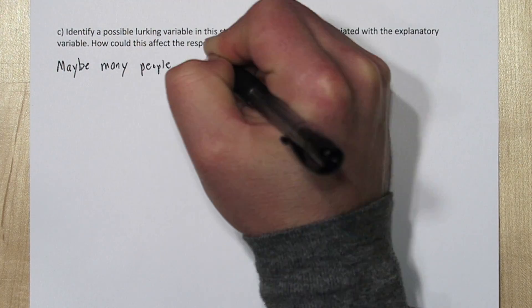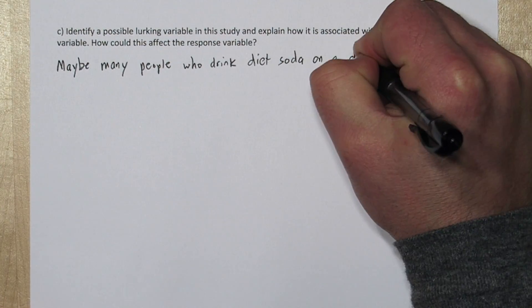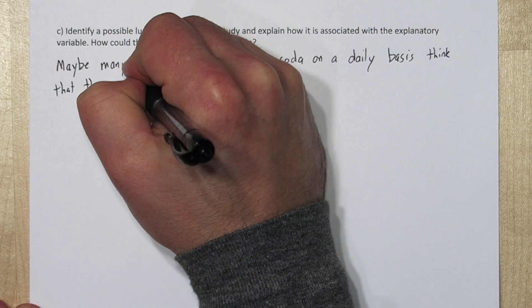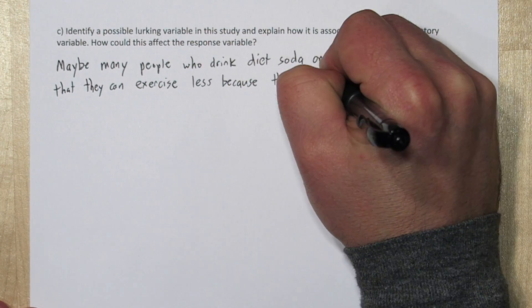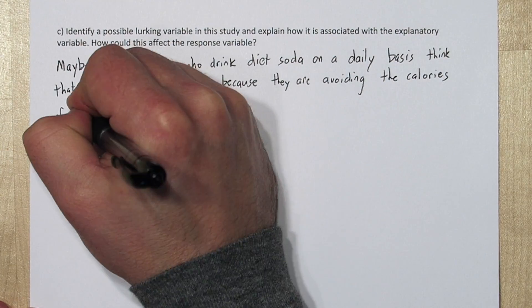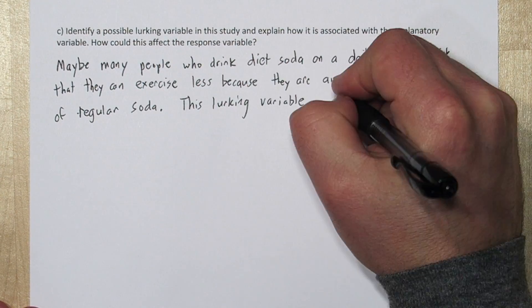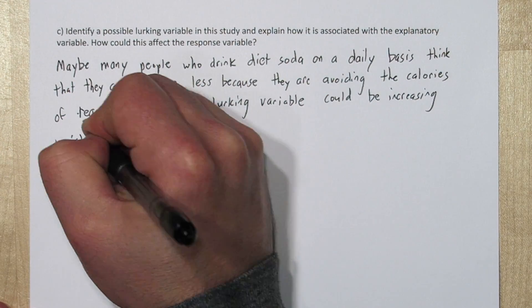Maybe many people who drink diet soda on a daily basis think that they can exercise less because they're avoiding the calories of regular soda. This would be a lurking variable that might be associated with increasing waist circumference.